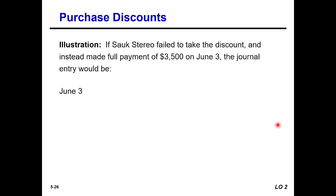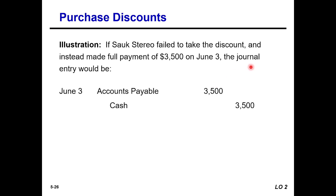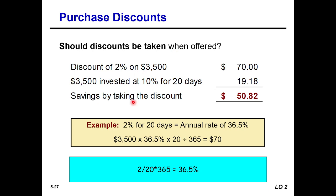If Sauk Stereo failed to take the discount and instead made full payment of $3,500 on June 3 — meaning the buyer completely missed the 10-day discount window and now must pay within 30 days — he gets no discount. The journal entry would be: Accounts Payable debit and Cash credit for $3,500.